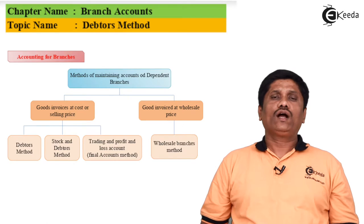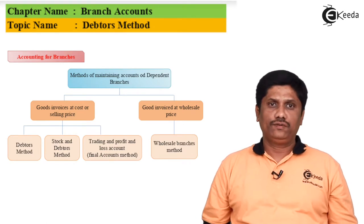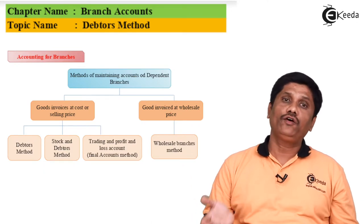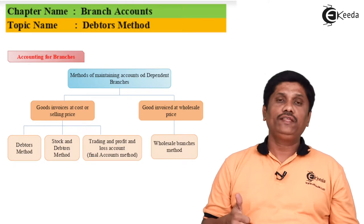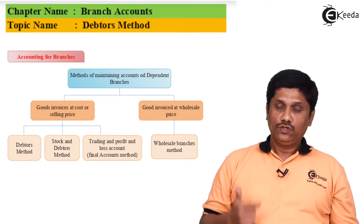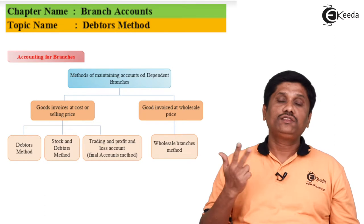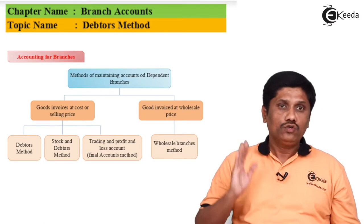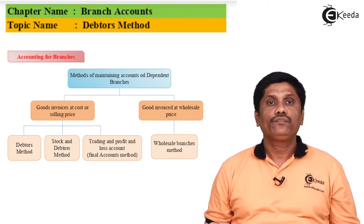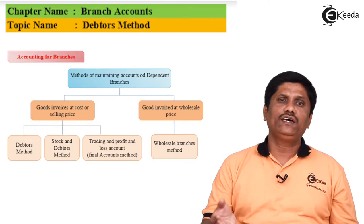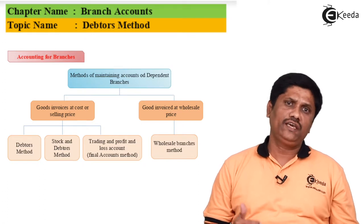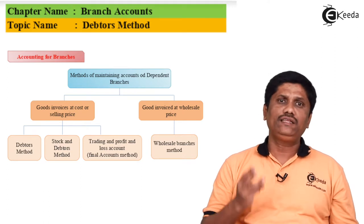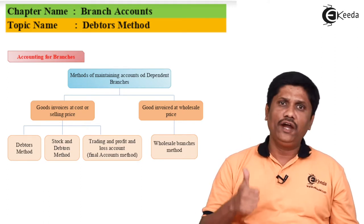Let's see how accounting will be done for dependent branches. There are three different methods for dependent branch accounting. The first method is the data method. The second method is the stock and data method. The third method is the trading and profit and loss method, where you prepare a final account. We will also look at wholesale branches, though that is minimal at the CA Inter or CA IPCC course level.